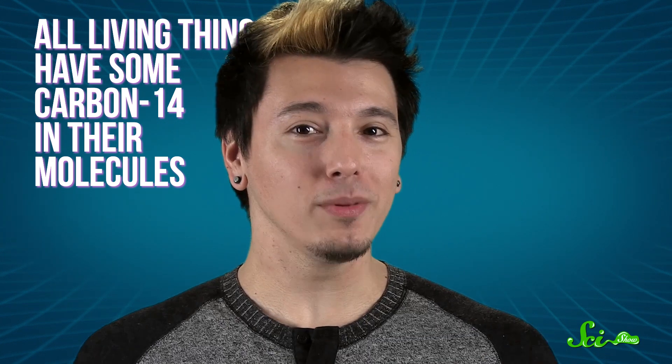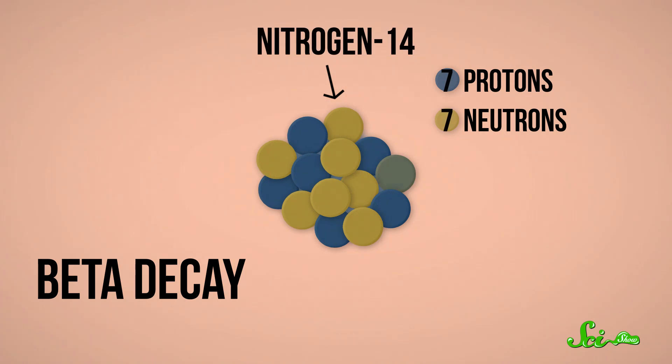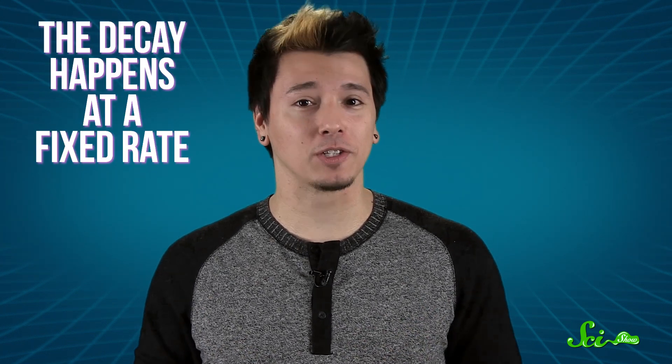But that carbon doesn't stick around forever, because it's not completely stable. At some point, it undergoes a process known as beta decay, in which basically it loses an electron, turns one of its neutrons into a proton, and becomes nitrogen-14. And luckily for scientists who specialize in studying old biological material, like archaeologists, this decay process happens at a fixed rate.